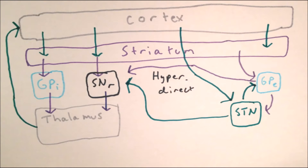Additional inhibitory connections from the globus pallidus externa to the substantia nigra pars reticularis and globus pallidus interna have also been discovered. There are a number of new models to explain these new functions and anatomical connections, and in this video I will outline my favorite one — the model proposed by Gurney et al.